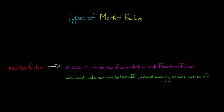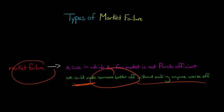So if you remember from before, a Pareto efficient allocation is one in which we could not possibly make anyone better off without making at least one person worse off. In a market failure, we're in a situation where we could conceivably make a person better off without hurting anyone else. And so if we're in that situation, that means that markets have failed.